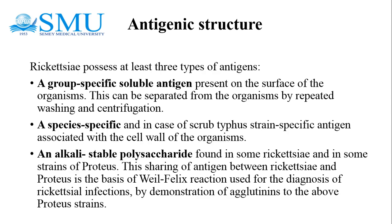Antigenic structure of Rickettsia: Rickettsia possesses at least three types of antigens. A group-specific cell-soluble antigen present on the surface of the organisms, which can be separated by repeated washing and centrifugation. A species-specific antigen, and in the case of scrub typhus, a strain-specific antigen associated with the cell wall. An alkaline-stable polysaccharide found in some Rickettsia and in some strains of Proteus — this shared antigen is the basis of the Weil-Felix reaction, used for diagnosis of rickettsial infections by demonstration of agglutinins to Proteus strains.